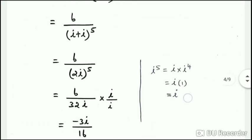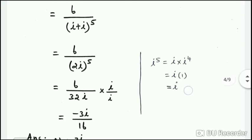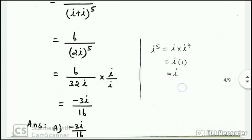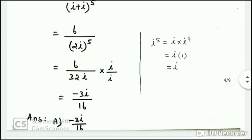Substituting z = i gives 6/(2i)^5. The numerator and denominator simplify to give minus 3i/16. Option A: the answer is -3i/16.